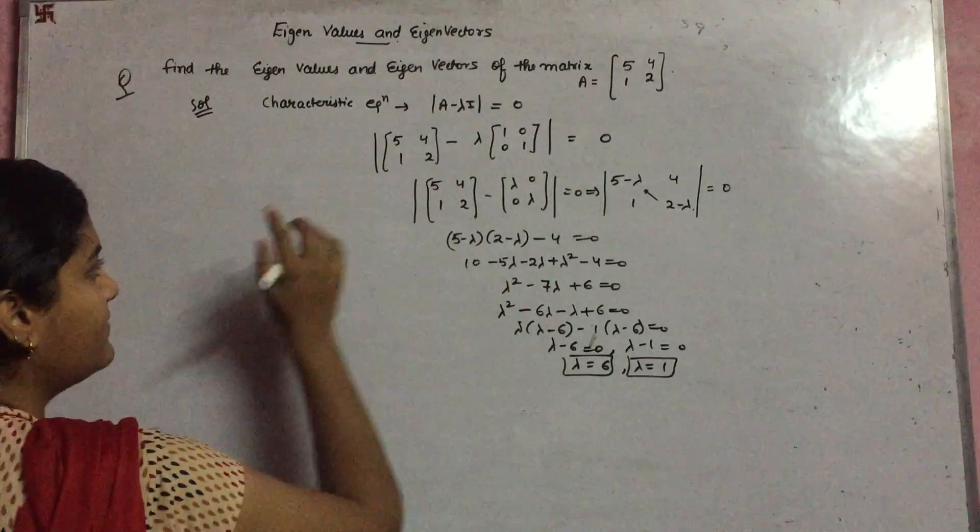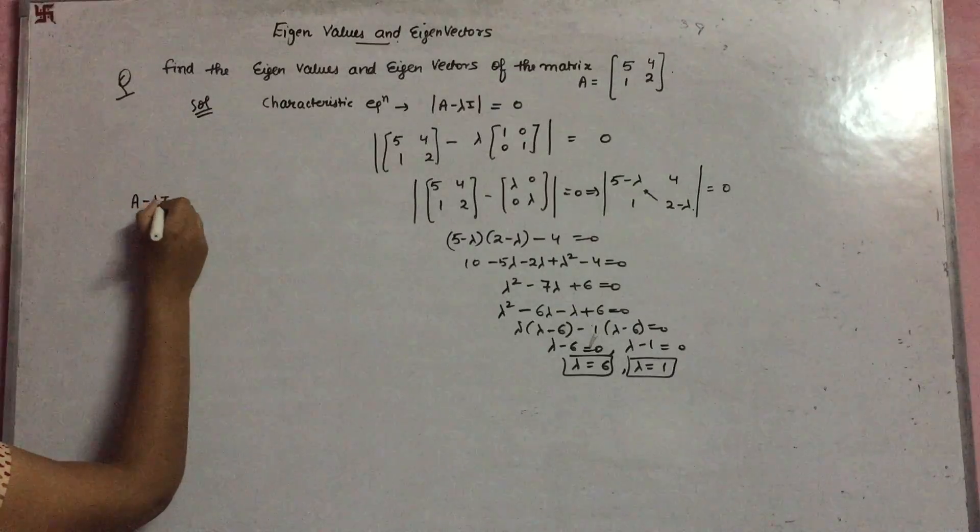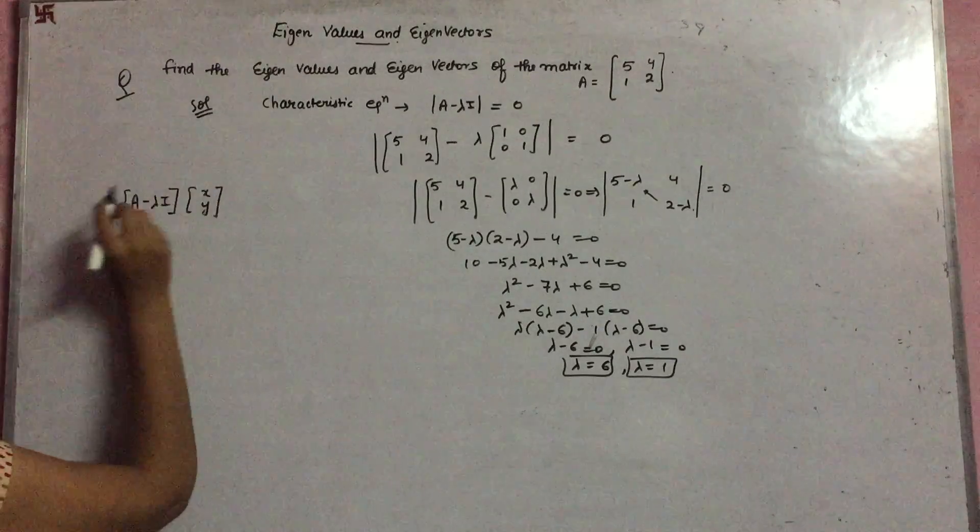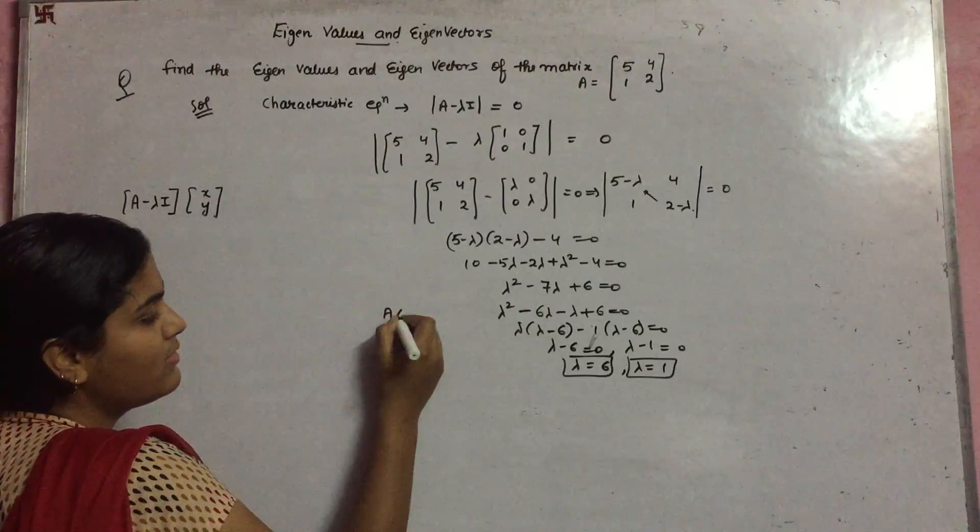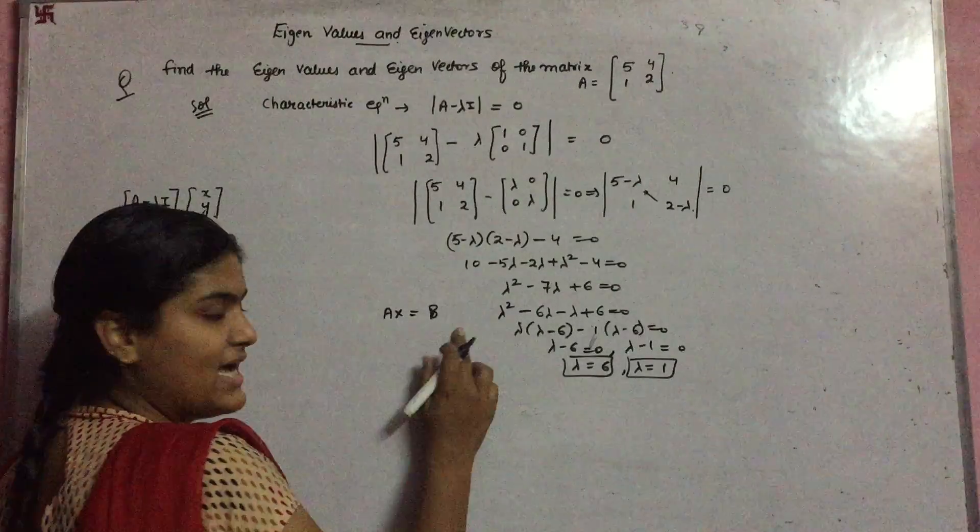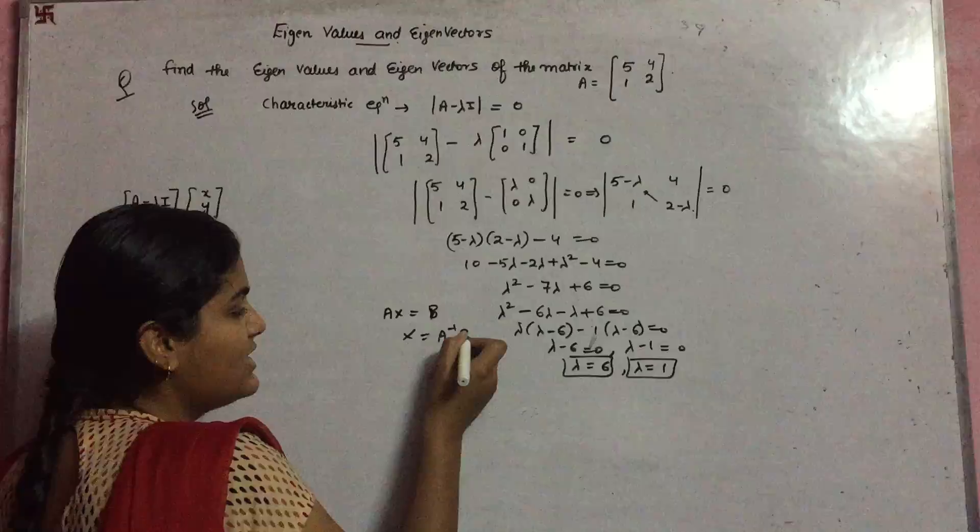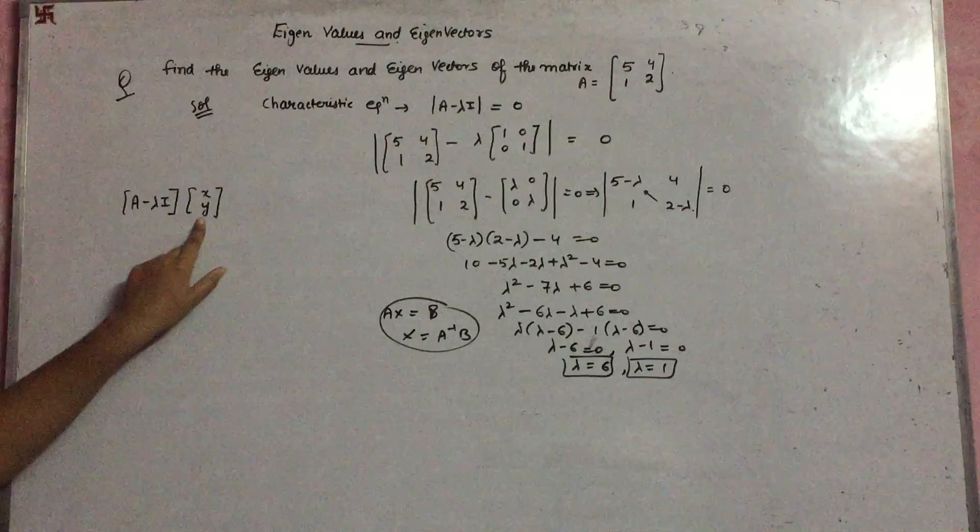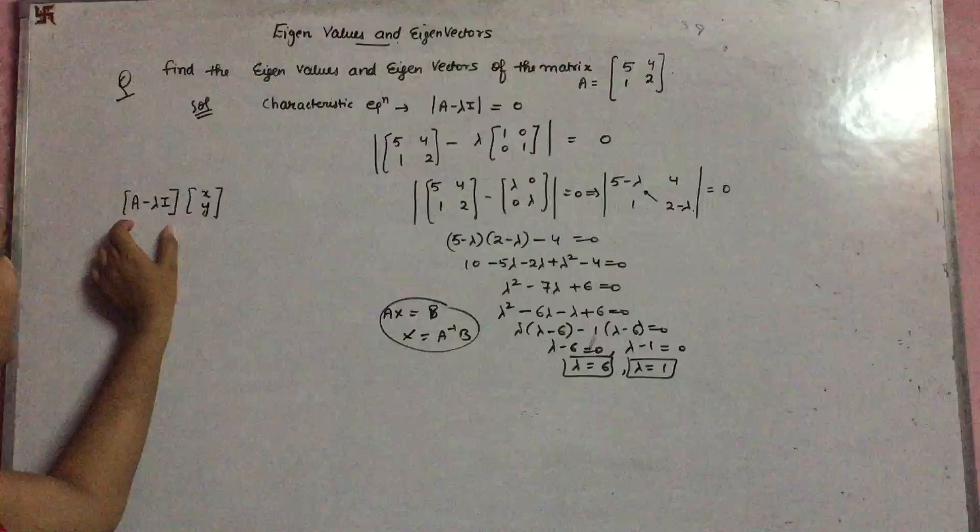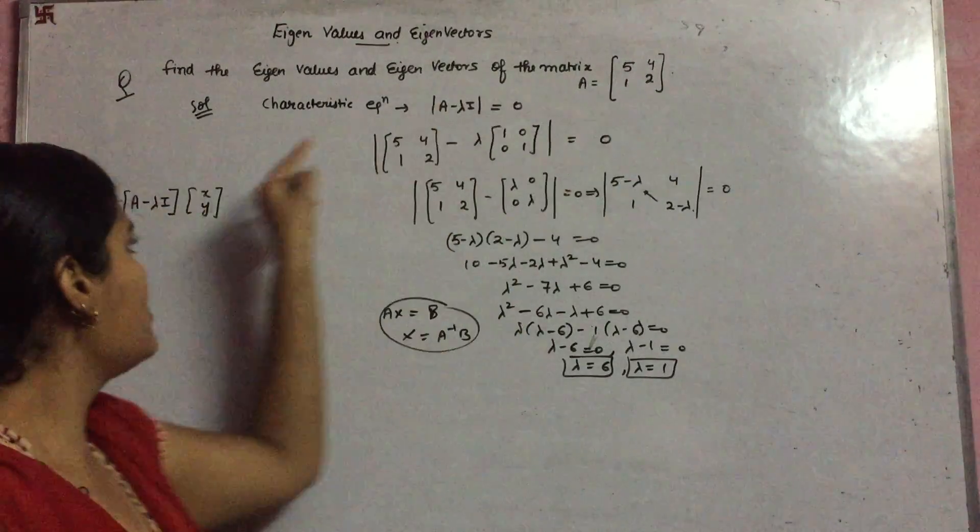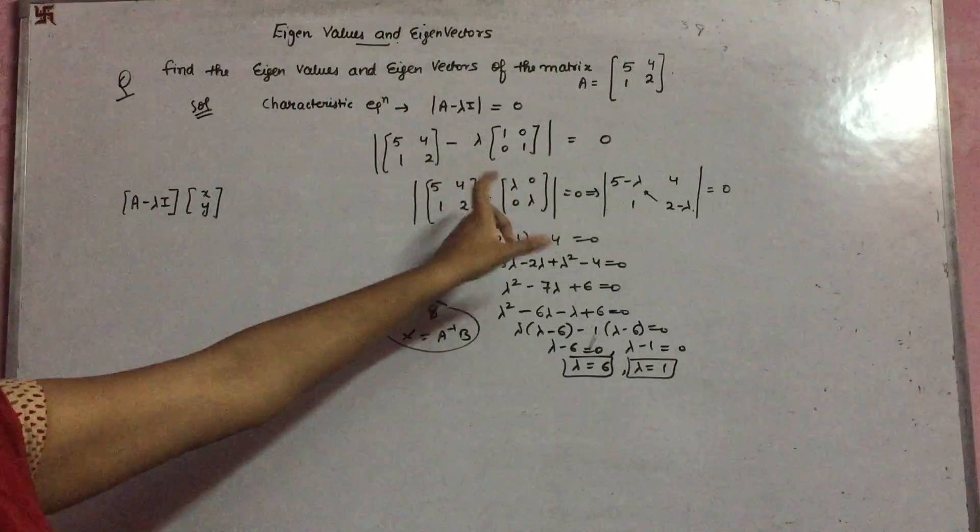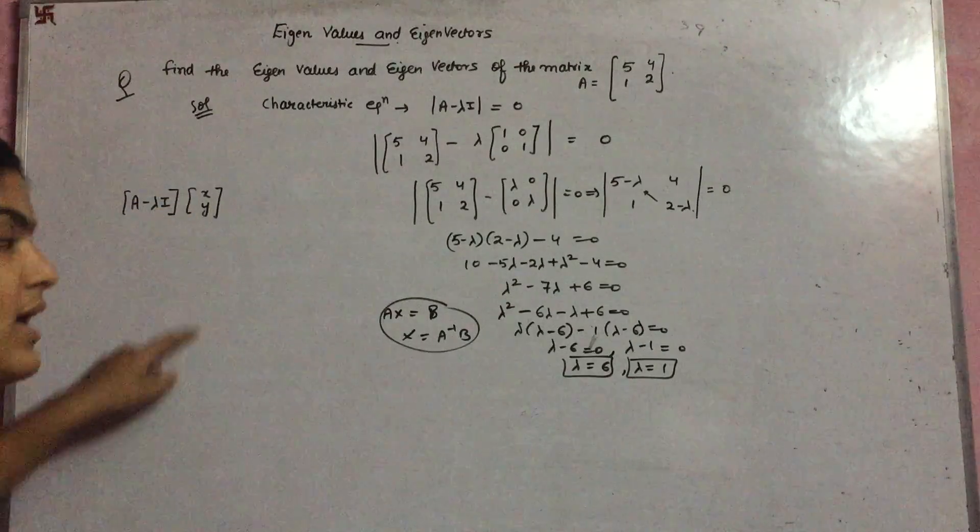You have to put the value of lambda here, and your equation is this matrix multiplied by x. Remember what we do in finding the inverse of a matrix? This equation is like Ax = b, and x becomes A⁻¹b. Just like that, you transform it into variables x and y. Take the characteristic equation and the value of the matrix. If it's 2×2 order, take x, y in a column matrix. If it's 3×3, take three variables x, y, z.